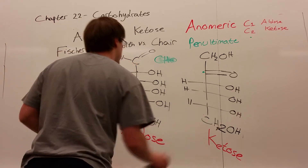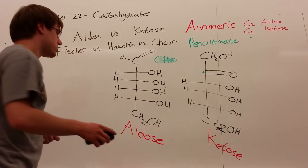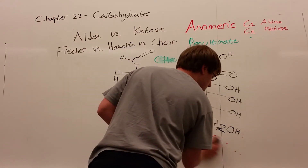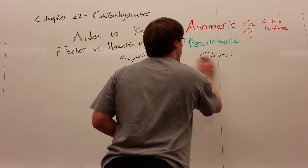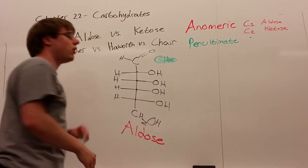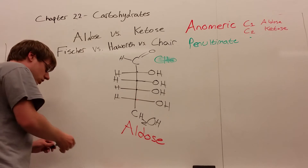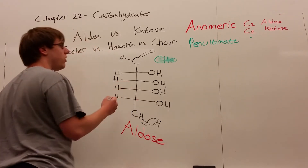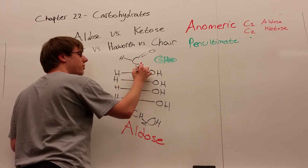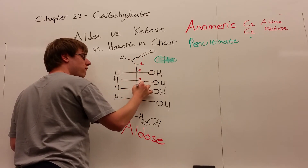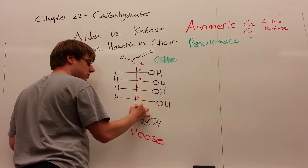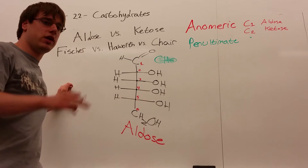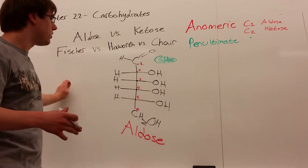Now, how about translating these into Haworth projections? We're going to make a couple of rules, then start with the aldose and then draw the ketose. First, how do we form the ring that makes up the Haworth and chair projections? I'm going to number the carbons 1, 2, 3, 4, 5, and 6 — six carbons altogether, so this is called a hexose, or an aldohexose.